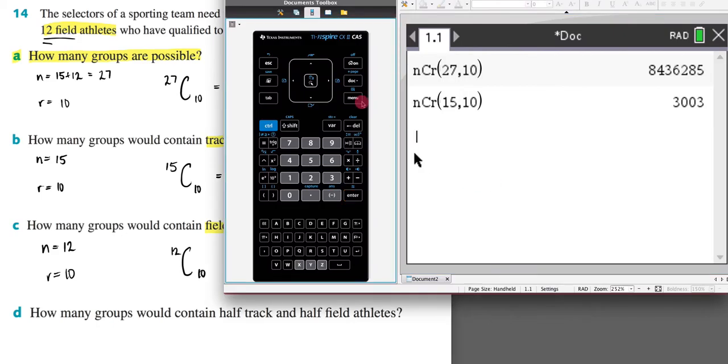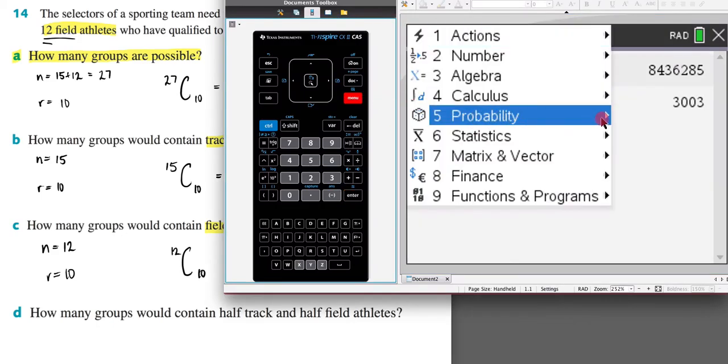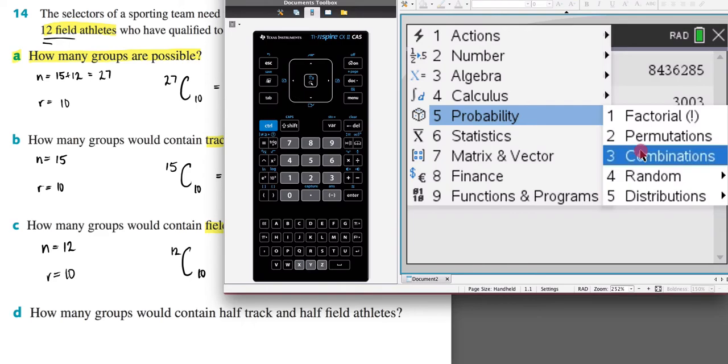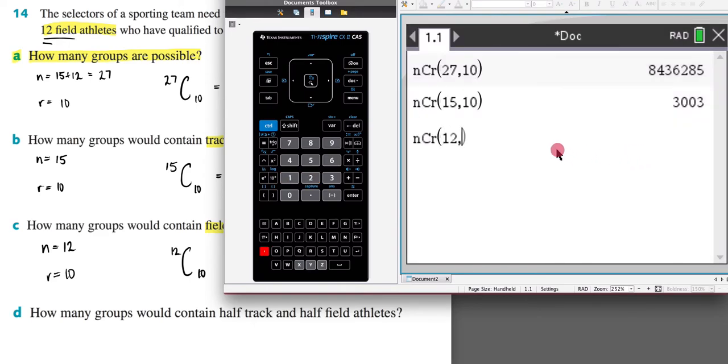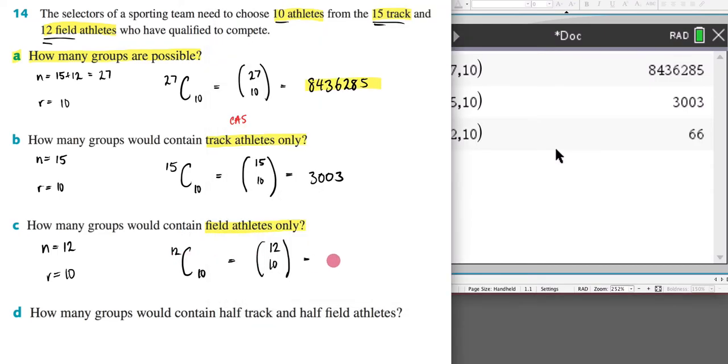Now we come over here and we go menu, we go probability, then we go combinations, we type in my n value first then the r value, 12 and 10, and my answer is going to be 66.